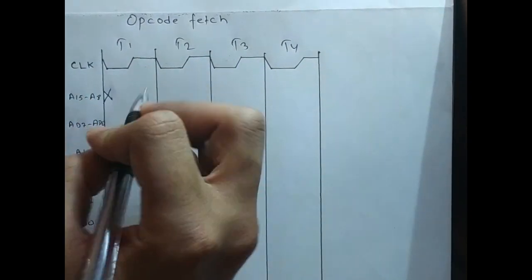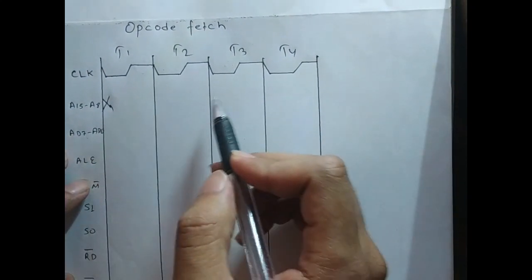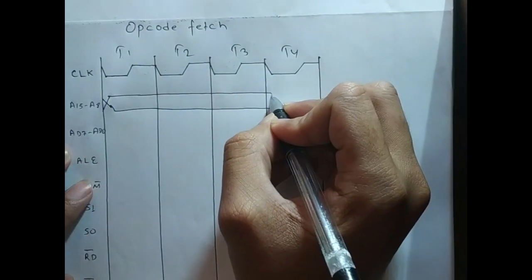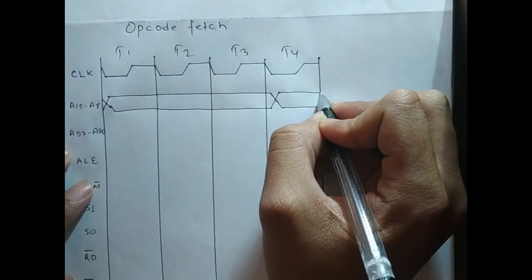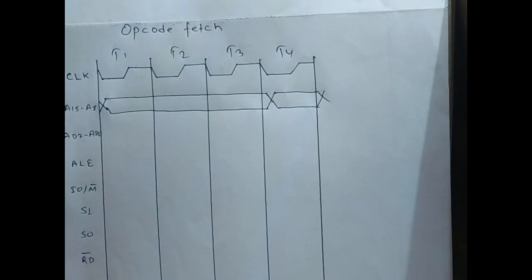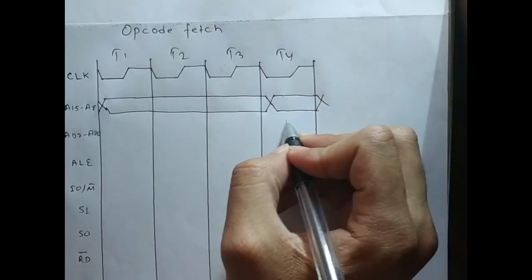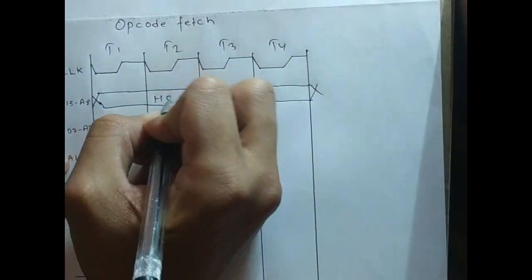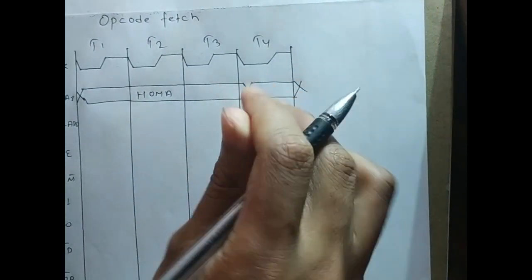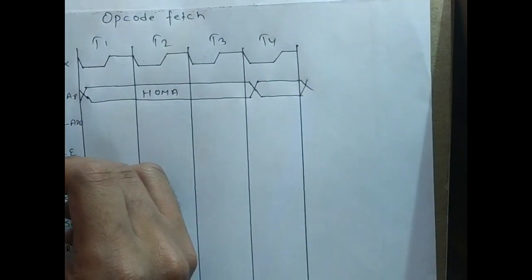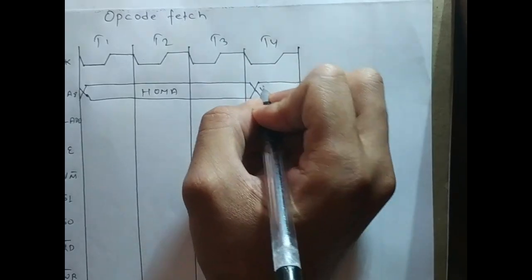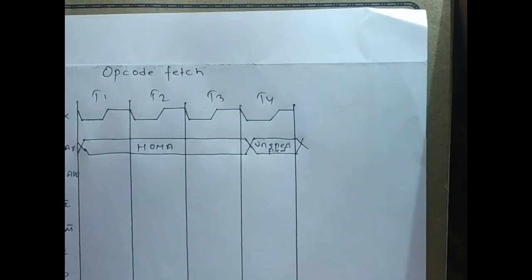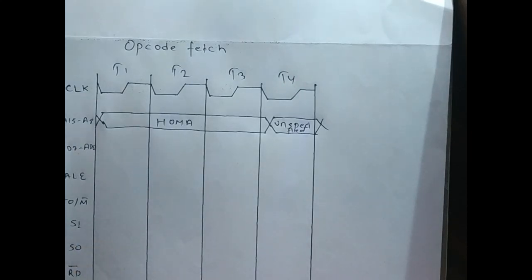I said that in the first 3 T-states it will fetch the opcode, and in the 4th T-state it will decode it. So we have to fetch the opcode for the first 3 T-states, and in T4 decoding will be performed. So this part will bring the higher order memory address, and in T4 decoding works. Since decoding is happening in T4, the address bus is not needed there, so it can have a garbage value — we can show that with crossed hatching.